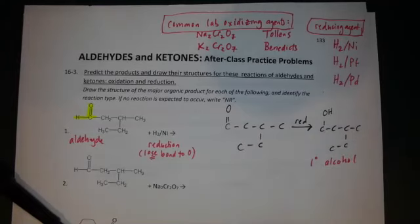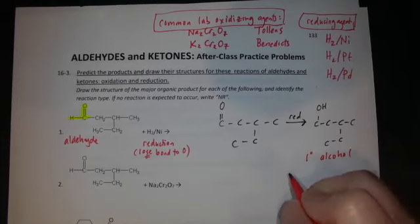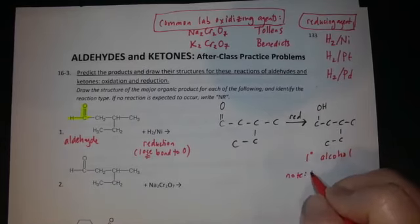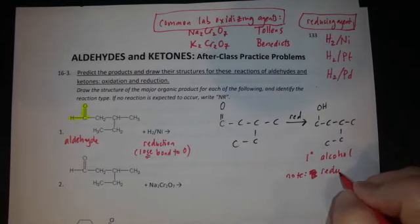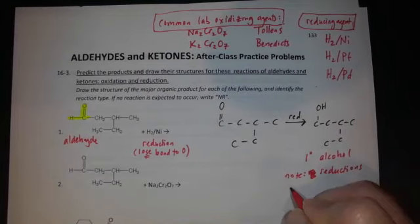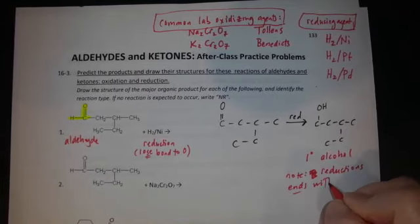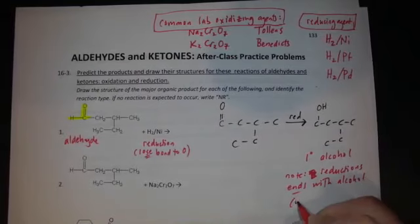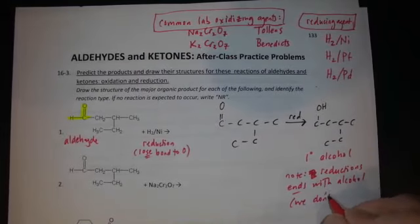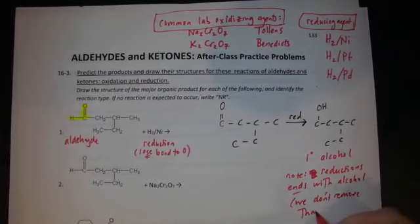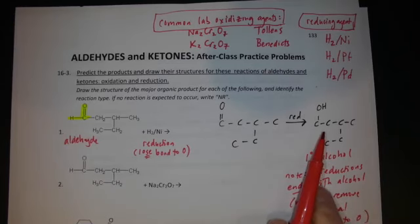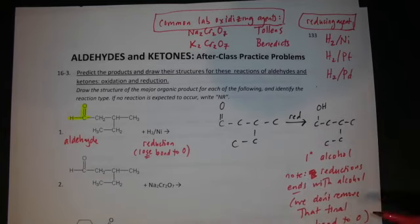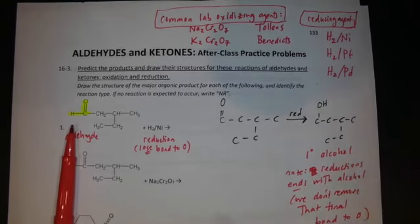Note: reduction ends with alcohol — we do not remove that final bond to oxygen. The product is a primary alcohol. This is our final answer. We started with an aldehyde and reduced it to a primary alcohol.